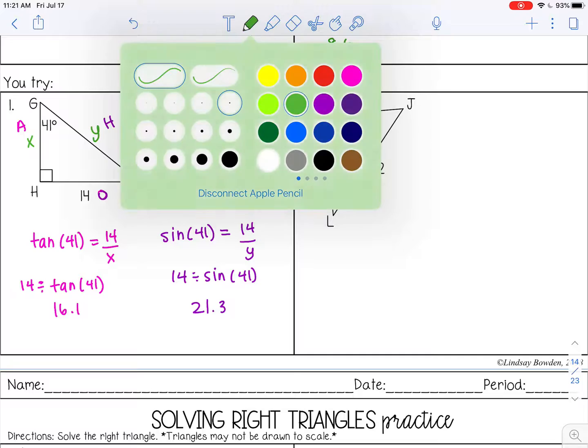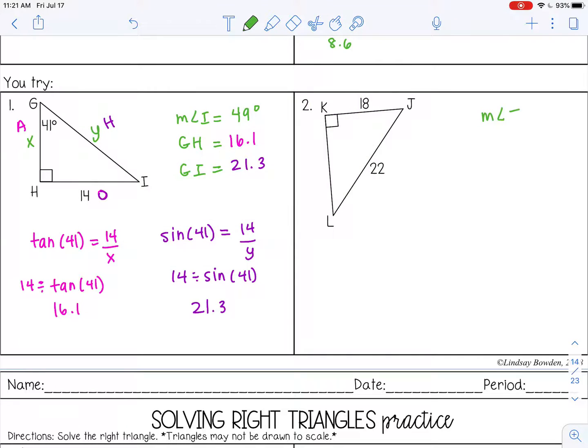And then in number 2, I'm missing the measure of angle J, the measure of angle L, and side KL. So again I'm going to use the Pythagorean theorem. So a squared plus 18 squared equals 22 squared. 18 squared is 324, 22 squared is 484, and when I subtract 324 from both sides that gives me 160. And then take the square root of both sides, I get about 12.6.